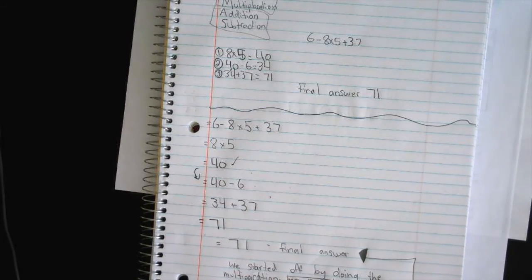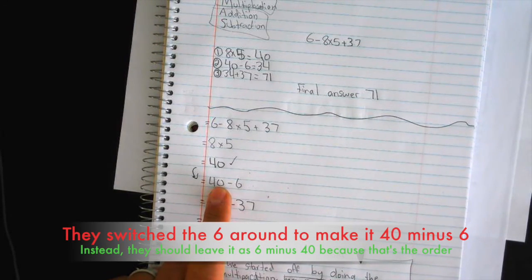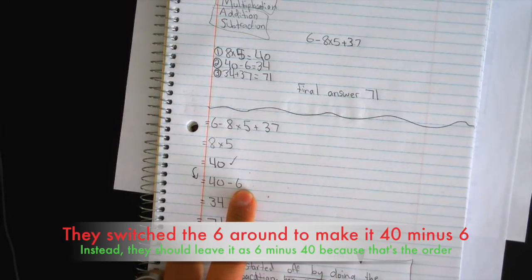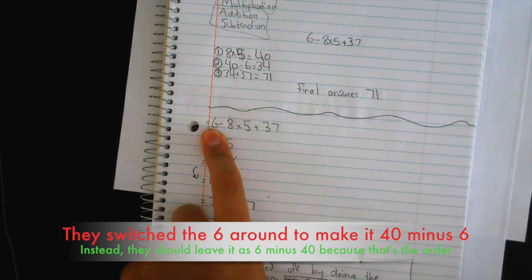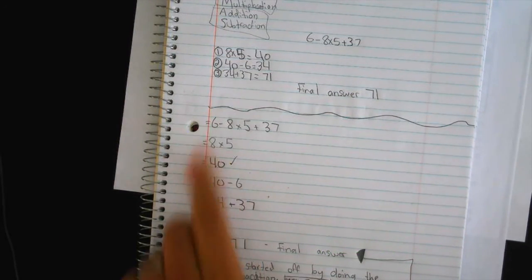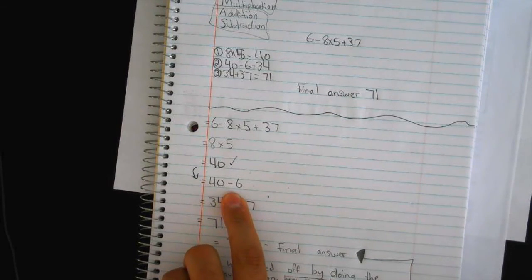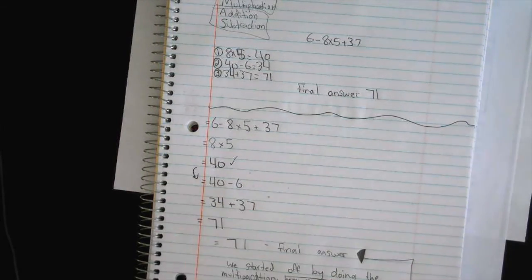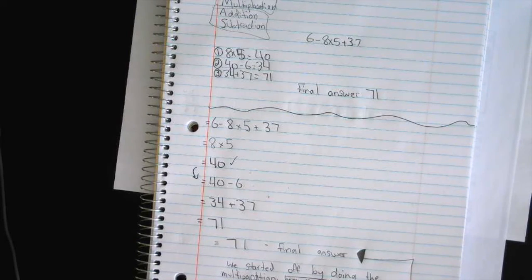So what they did was they switched the 6 around, and we're not supposed to do that. So here it says 40 minus 6, but over here I see the 6 first, but they switched the order. Does anyone else want to show us how they came up with their answer?